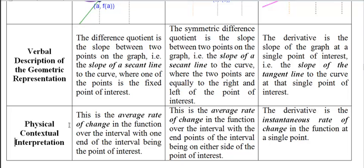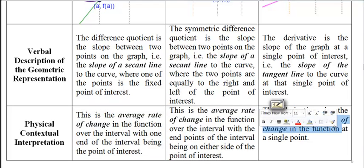The derivative is the instantaneous rate of change in the function at a single point. So in our example that we looked at, the difference quotient and symmetric difference quotient were both average speeds, and the derivative was the instantaneous speed, or instantaneous velocity, or these were average velocities for these two, and this was the instantaneous velocity. That's one example.